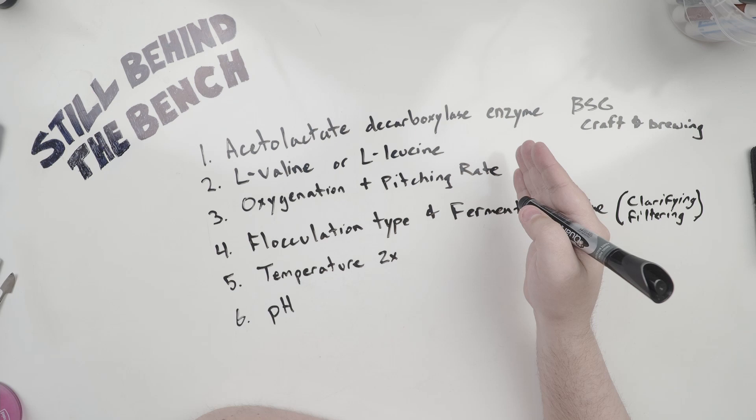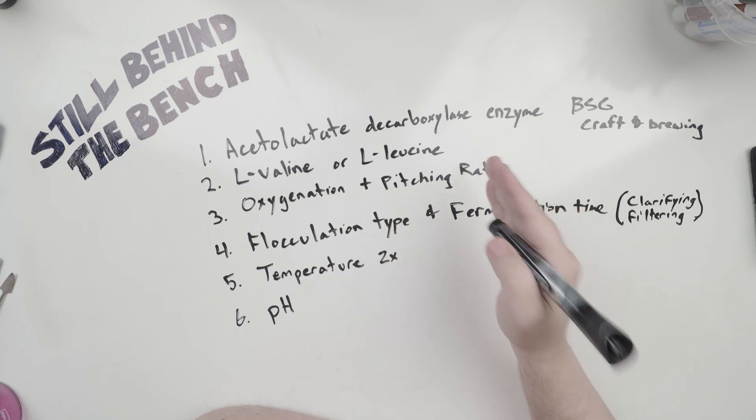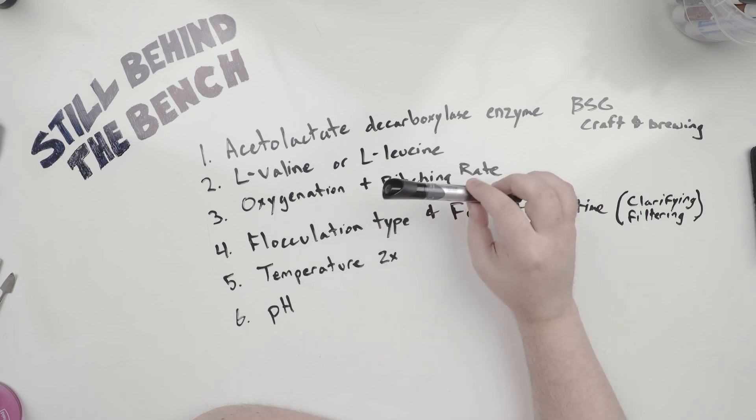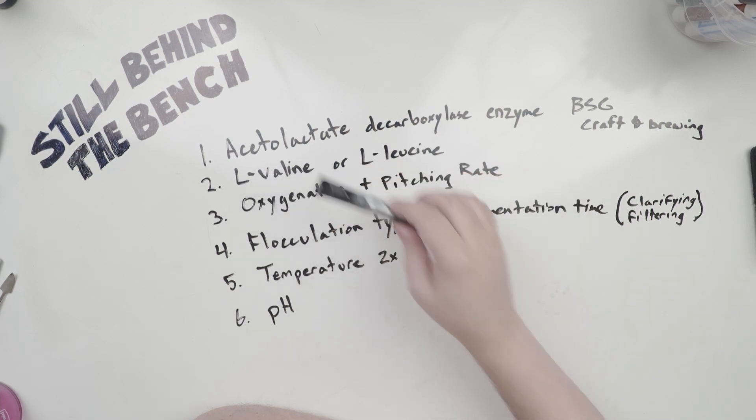So high oxygenation in combination with a low pitching rate can lead to high diacetyl concentrations, and the opposite, low oxygenation and a high pitching rate can lead to low diacetyl concentrations. It has nothing to do with the oxidation of acetoin into diacetyl. That doesn't happen. I can post a link to a study where they actually tested for that, and they showed that it doesn't happen. I only mentioned that oxidation thing because I've seen it mentioned in other forums before. But no, the reason is because you're producing more yeast cells, and those yeast cells need more amino acids.